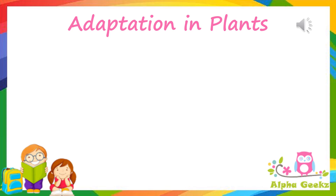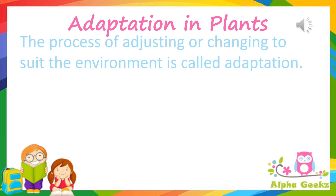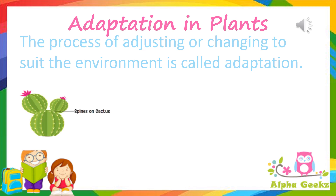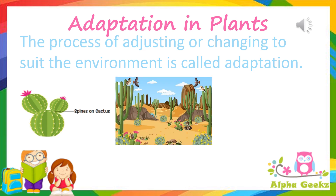Adaptation in plants. The process of adjusting or changing to suit the environment is called adaptation. These adaptations are special features that help plants make the most of the surrounding area and help them to survive, live, and grow in certain environments.